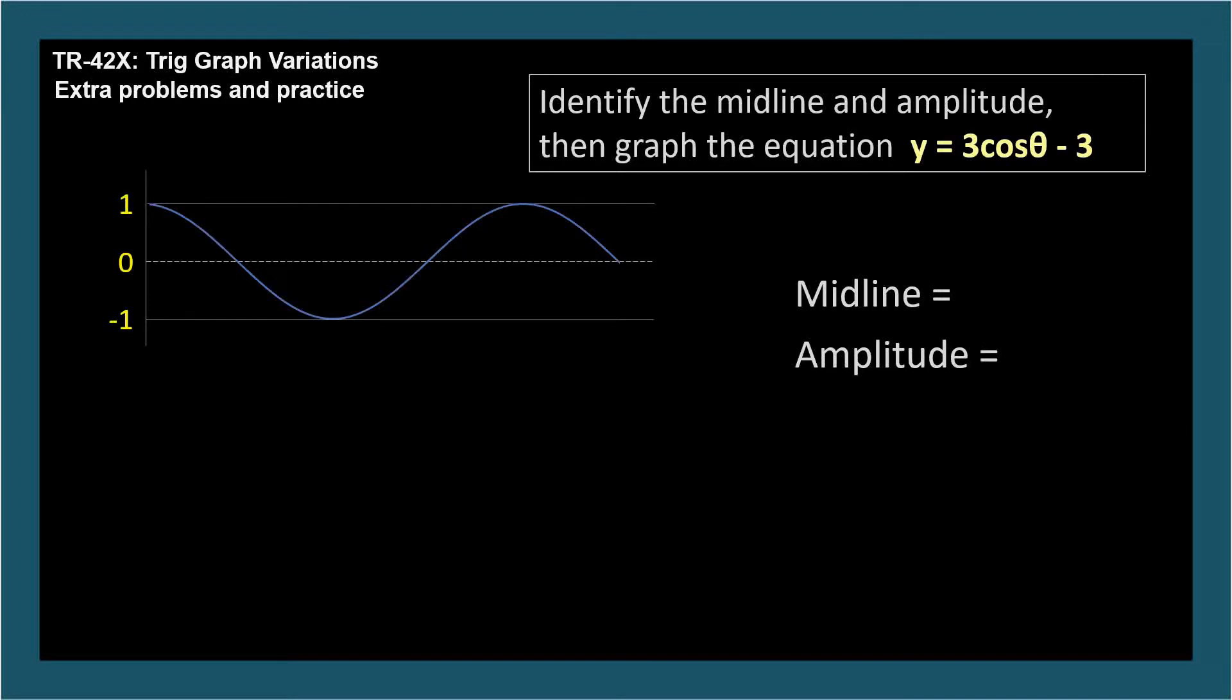Identify the midline and amplitude, then graph the equation y equals 3 cosine theta minus 3. Sometimes when asked to graph an equation, your instructor will provide you with the graph of the trig function to use. You're supposed to plot the equation on the coordinate system provided.